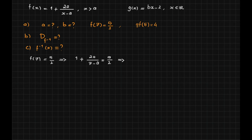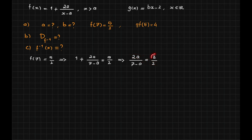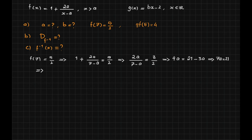I move 1 to the other side and have 2a over 7 minus a on the left side, which equals 5 over 2 minus 1, giving 3 halves. Then using the rule that the product of means equals the product of extremes: 2 times 2a equals 3 times (7 minus a). So 4a equals 21 minus 3a. Moving 3a to the left gives 7a equals 21, and dividing by 7 gives a equals 3.